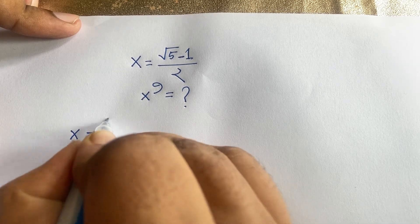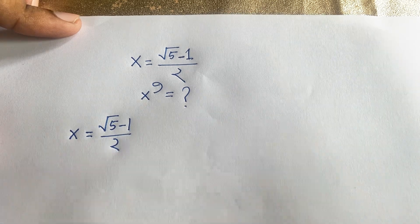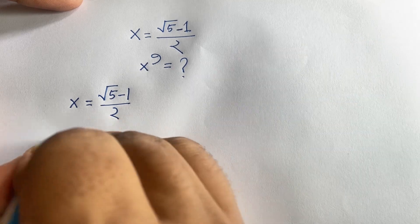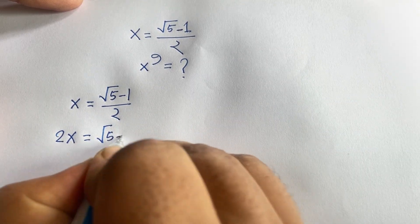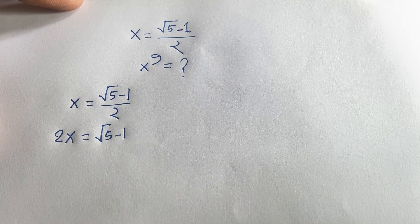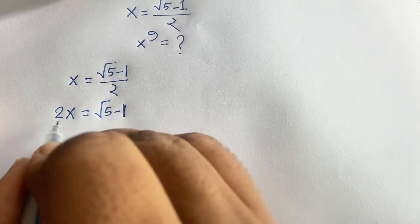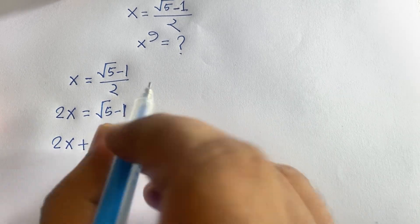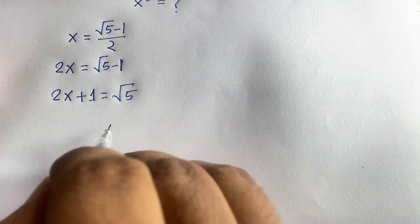If I multiply both sides, it will be 2x is equal to square root 5 minus 1. Then I can move this term to the other side: 2x plus 1 is equal to square root 5. But our target is x to the power 9 — what is it equal to?